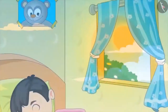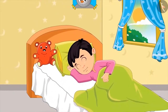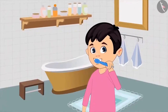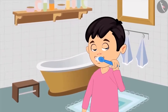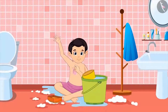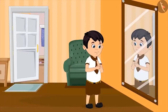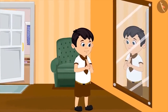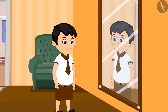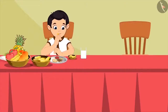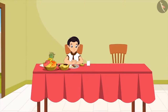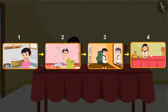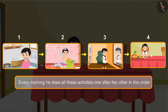It's morning time and Chotu has just woken up. He gets up and brushes his teeth first, then he takes a bath. After taking bath, he gets ready for school. Then he eats breakfast and drinks milk. This is the order of Chotu's morning activities — every morning he does these activities one after the other in this order.